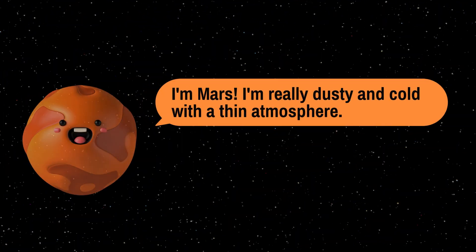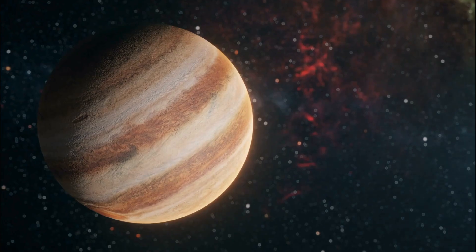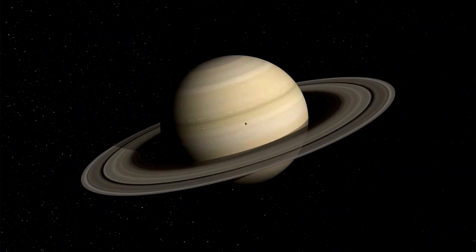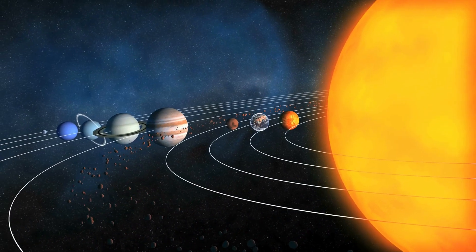Mars is red with mountains tall. Jupiter's the biggest of them all. Saturn's rings are spinning wide, Uranus tilts on its side.